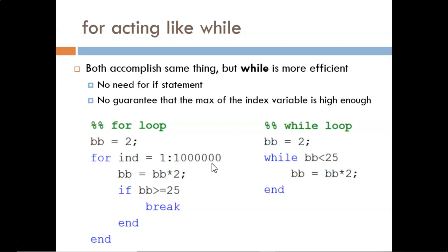Then, within the loop, I use this if statement to establish the exit condition. Once BB reaches 25 or above, then the break command is processed. Again, we see that choosing the wrong loop type can accomplish the same goal, but in a less efficient manner.